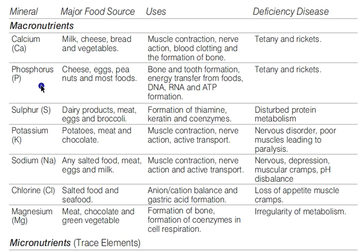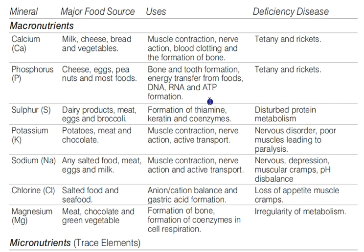Phosphorus is also important for bone formation and tooth formation, as well as for DNA, RNA, and ATP (adenosine triphosphate). Sources include cheese, eggs, peas, and peanuts. Deficiency of phosphorus causes rickets, as it is also involved in bone formation.